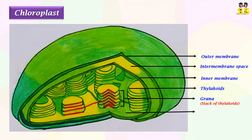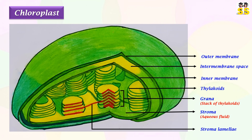Thylakoids are usually dispersed throughout the matrix known as stroma. The neighboring grana are connected by unstacked stromal thylakoids called stromal lamellae.